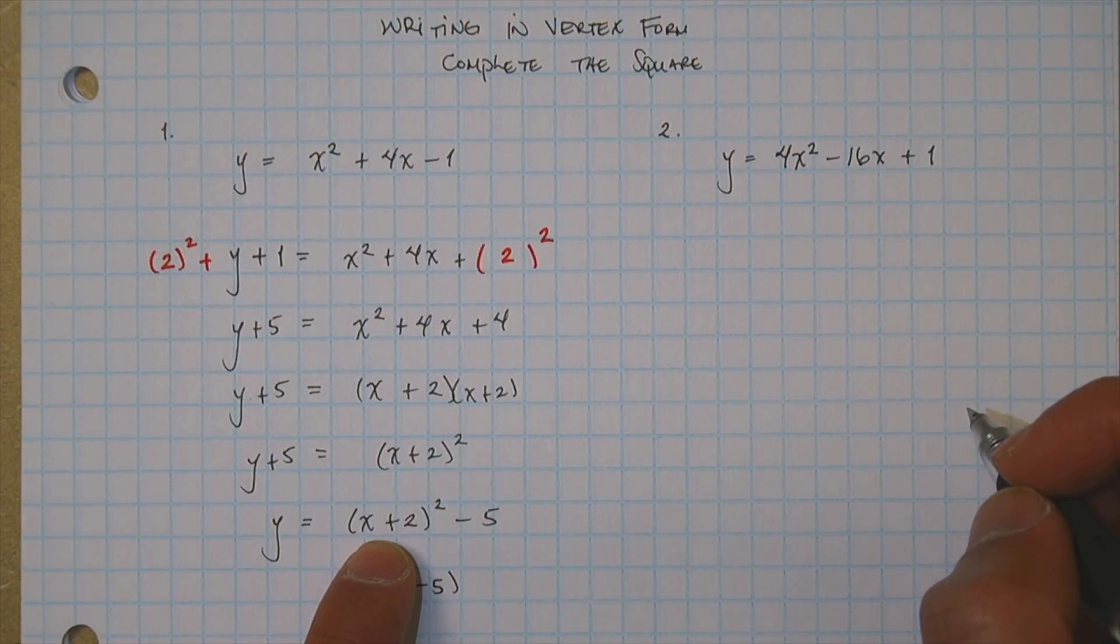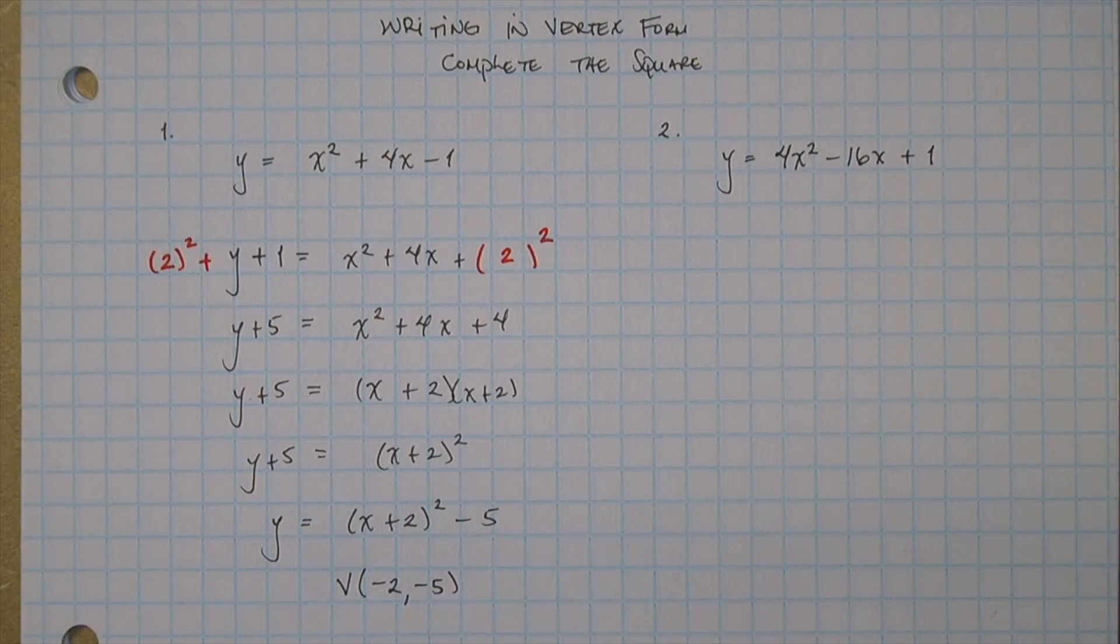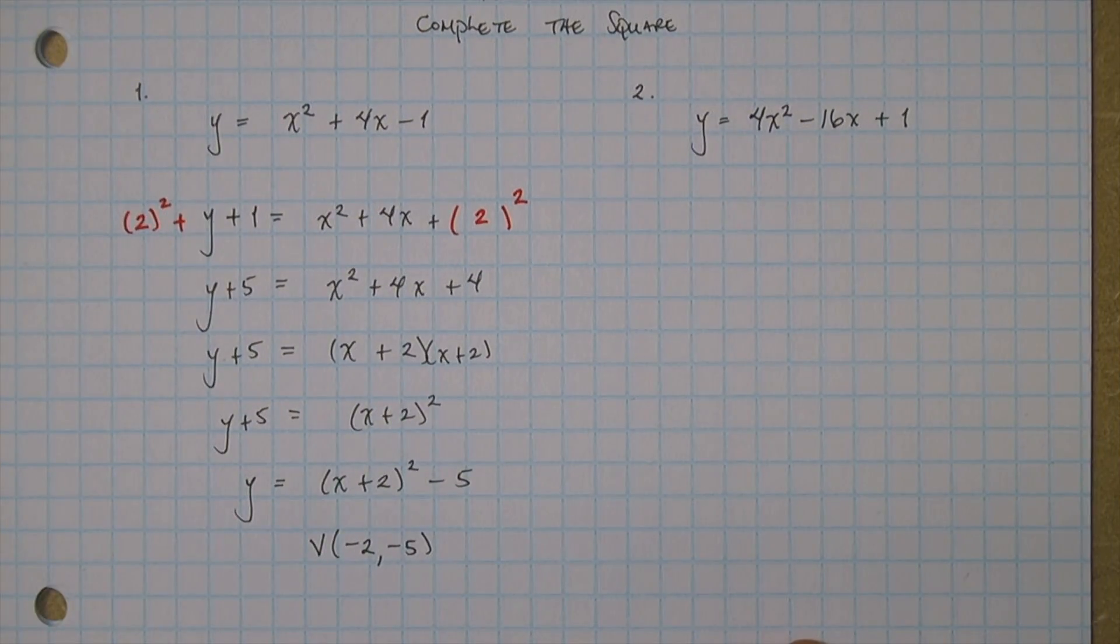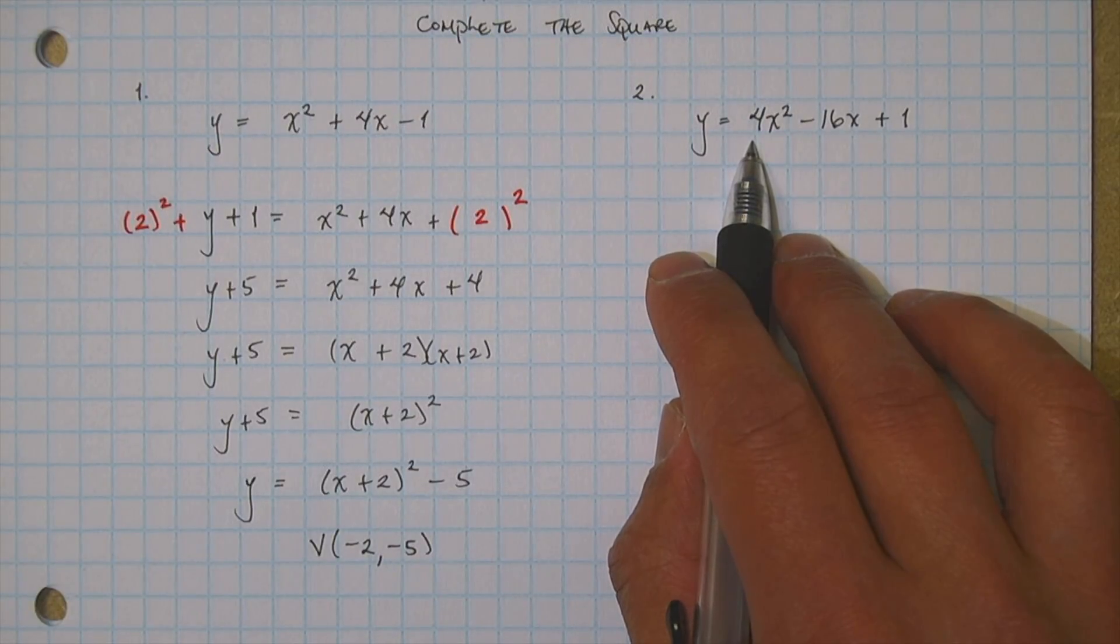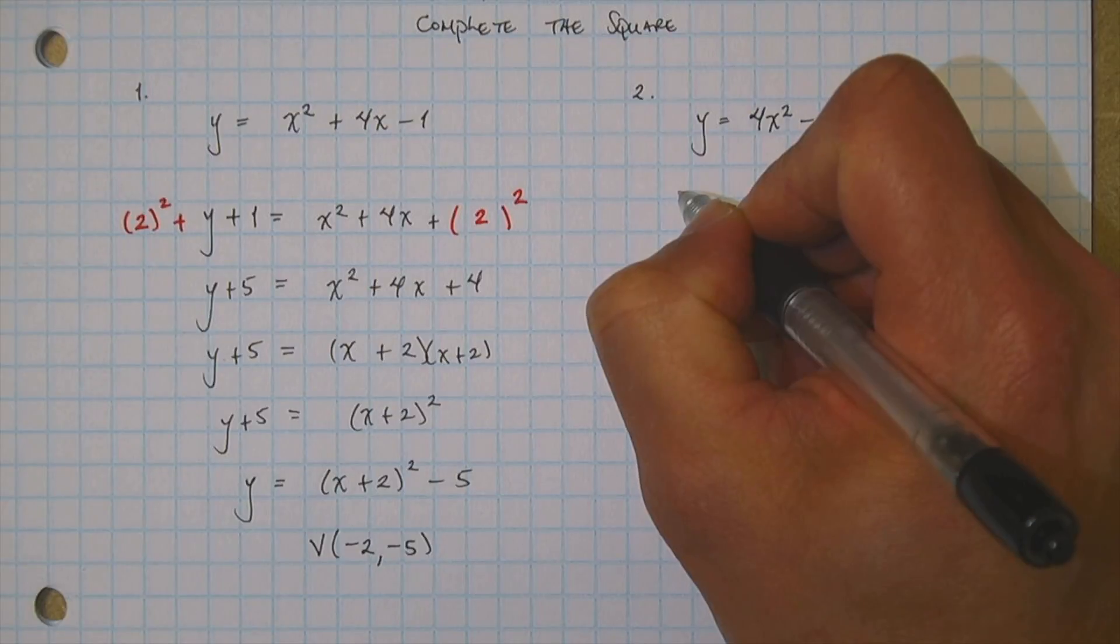And make sure you remember x plus 2 you got to set it equal to 0 and that's why it becomes a negative. Now over here in the second problem, we're going to do much the same thing but the thing about completing the square is you got to get rid of this 4. You cannot have that 4 in front. So we're going to go ahead and factor that guy out.